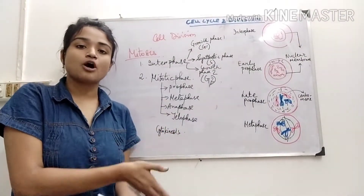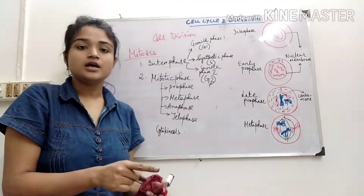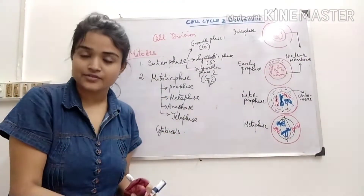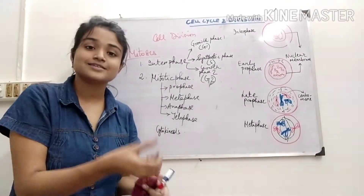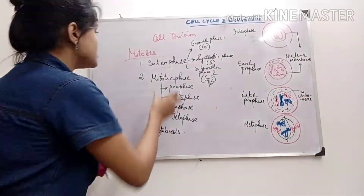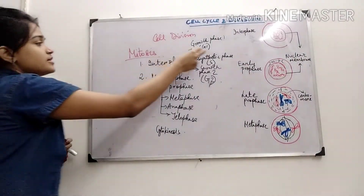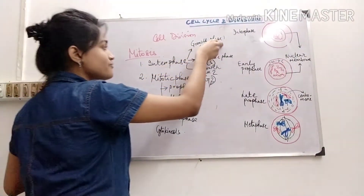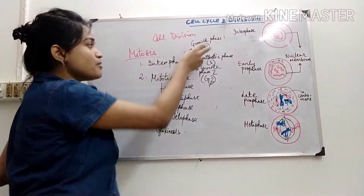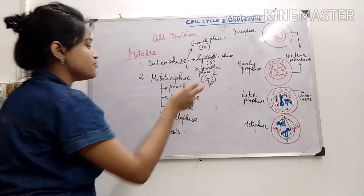When one cell division cycle is over, the cell exits cell division and enters the G0 stage. So interphase is made up of G1 phase, S phase, and G2 phase.